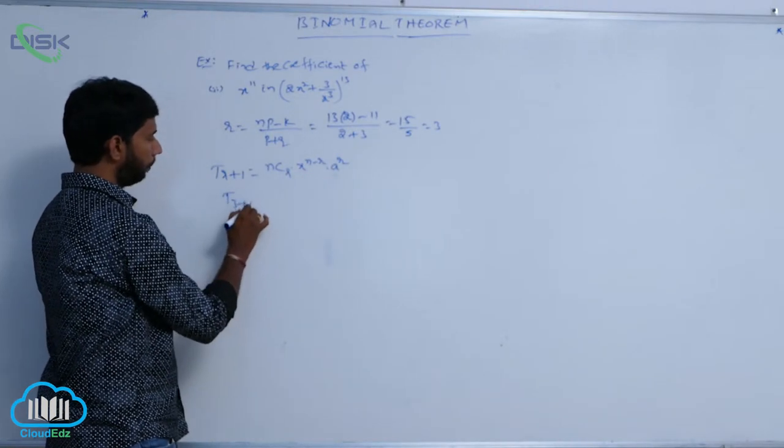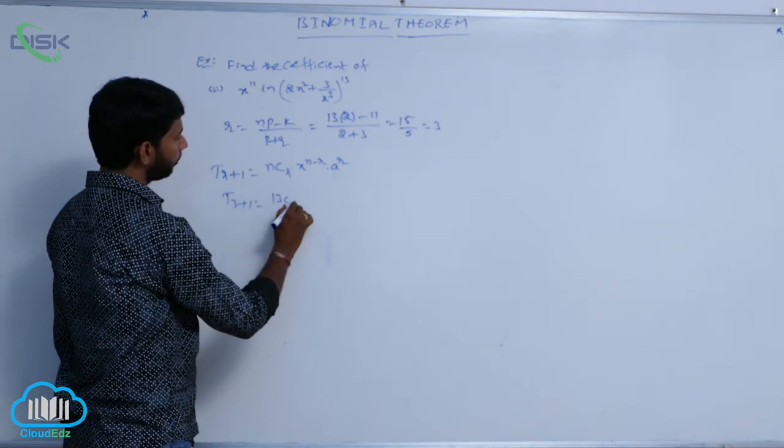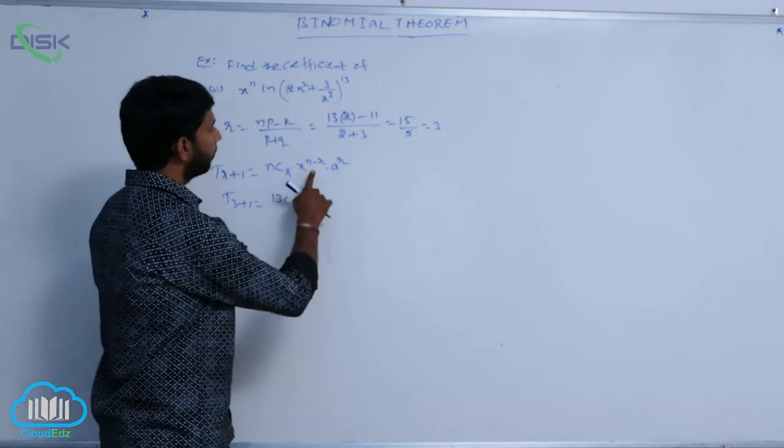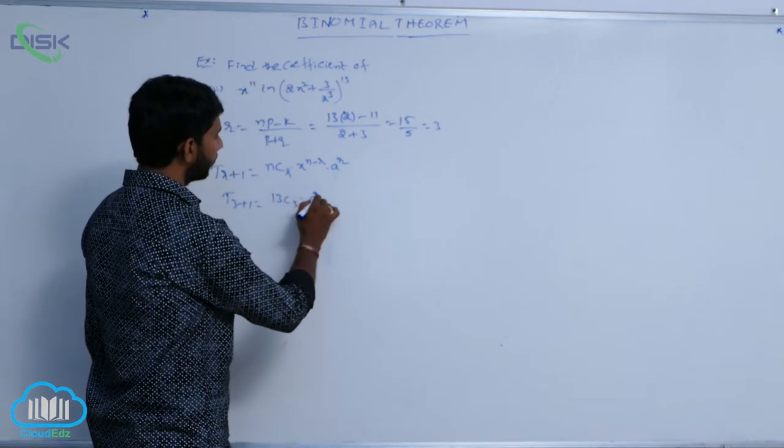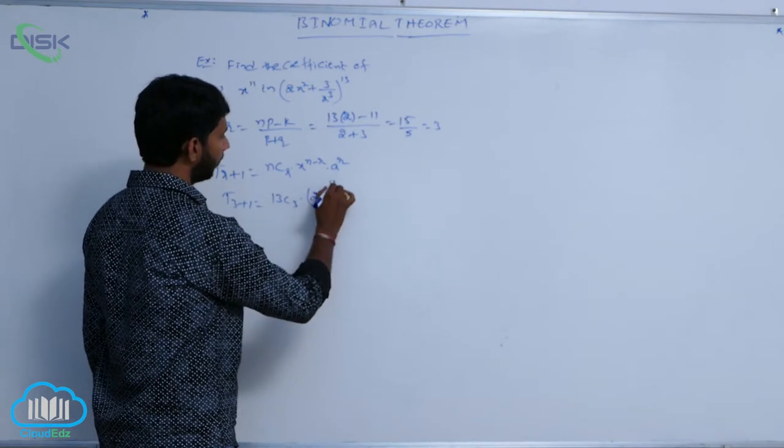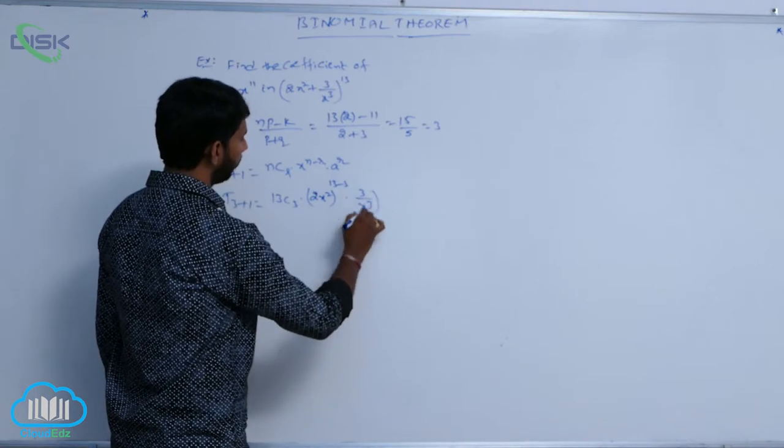That is find t 3 plus 1 is equal to, here n is equal to 13. That is 13 c 3 into x power. Here x is 2x square. 2x square whole power n minus r. That is 13 minus 3 into 3 by x cube whole power 3.